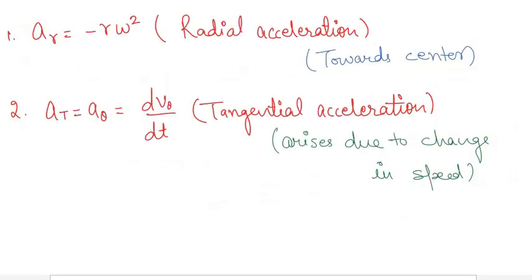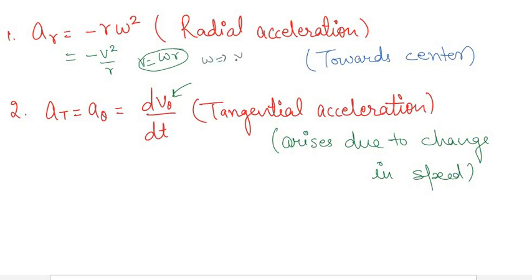To summarize: the radial acceleration is minus r times omega squared, directed towards the center, and the tangential acceleration a_t equals d(v-theta)/dt, arising when speed changes. The radial acceleration can also be written as minus v squared over r, since v equals r times omega, giving omega equals v over r.